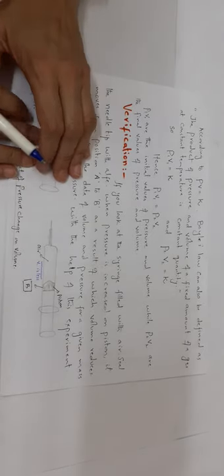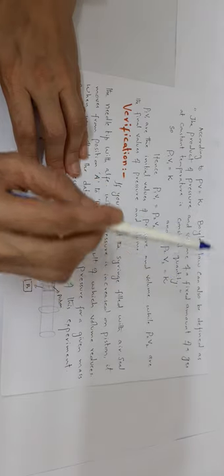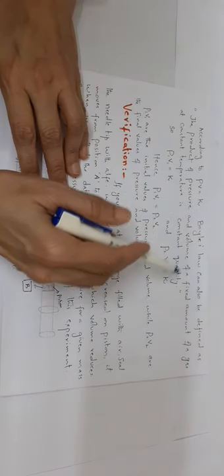According to Boyle's Law, PV = K. From this equation, we can define Boyle's Law in another way — a second definition. The product of pressure and volume of a fixed amount of gas at constant temperature is a constant quantity. This means when you multiply the value of pressure by the value of volume, you will always get a constant quantity.